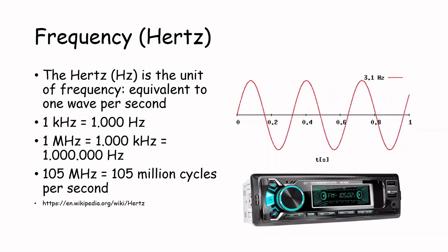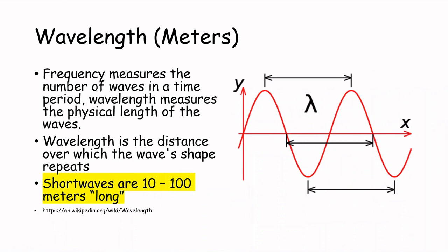While frequency measures the number of waves in a time period, wavelength measures the physical length of the waves. Wavelength is the distance over which the wave's shape repeats. Shortwaves are about 10 to 100 meters long, so actually not really short at all.